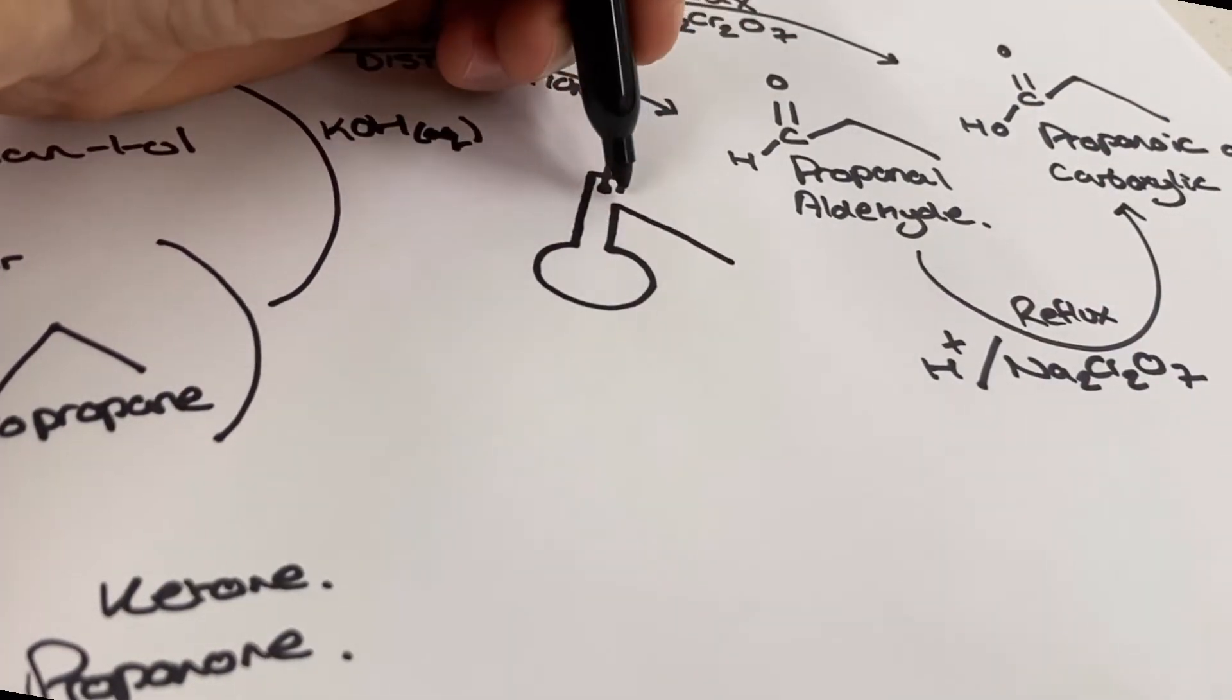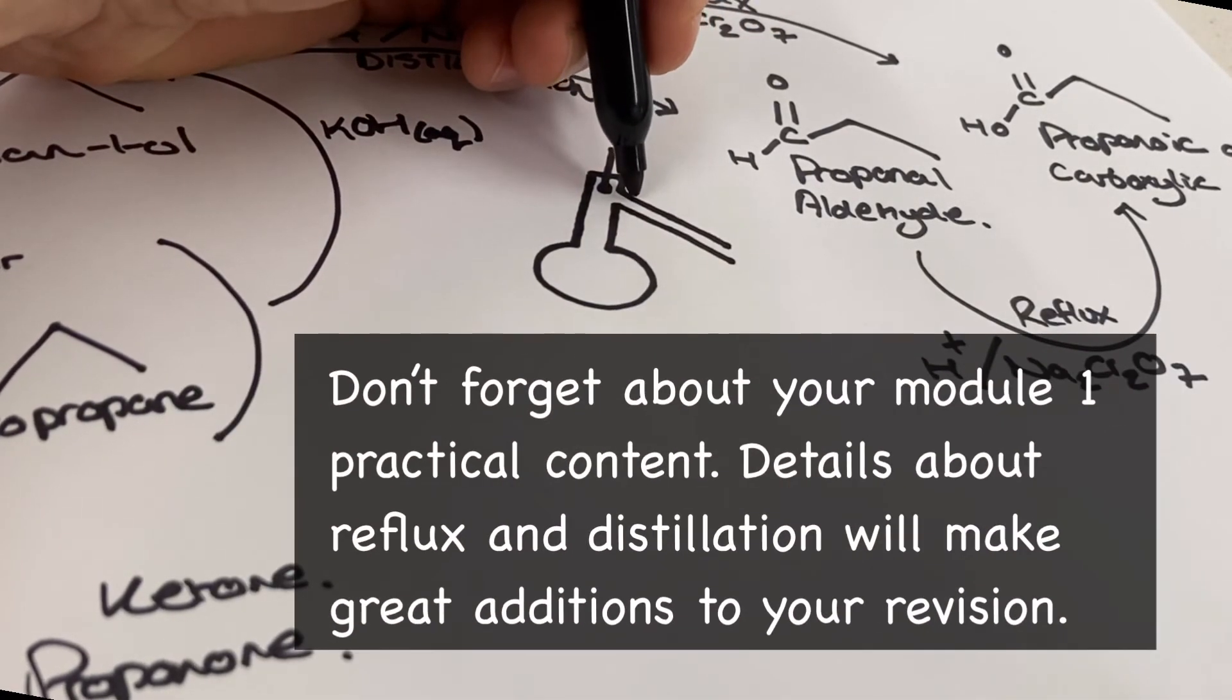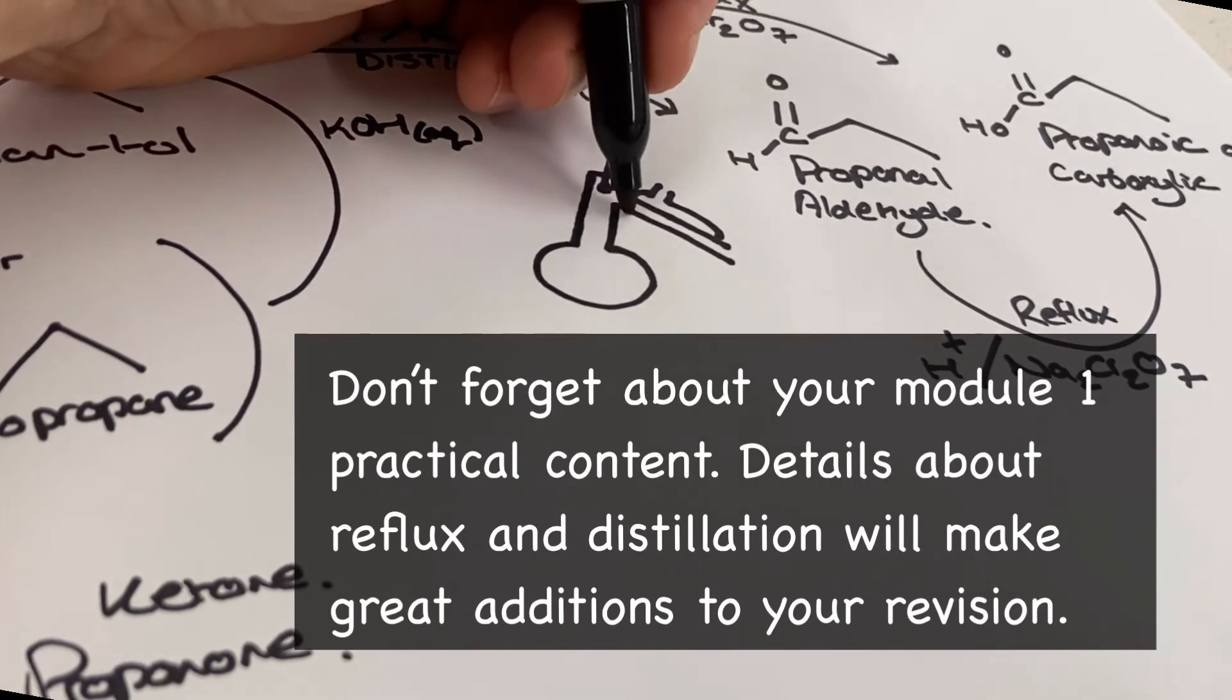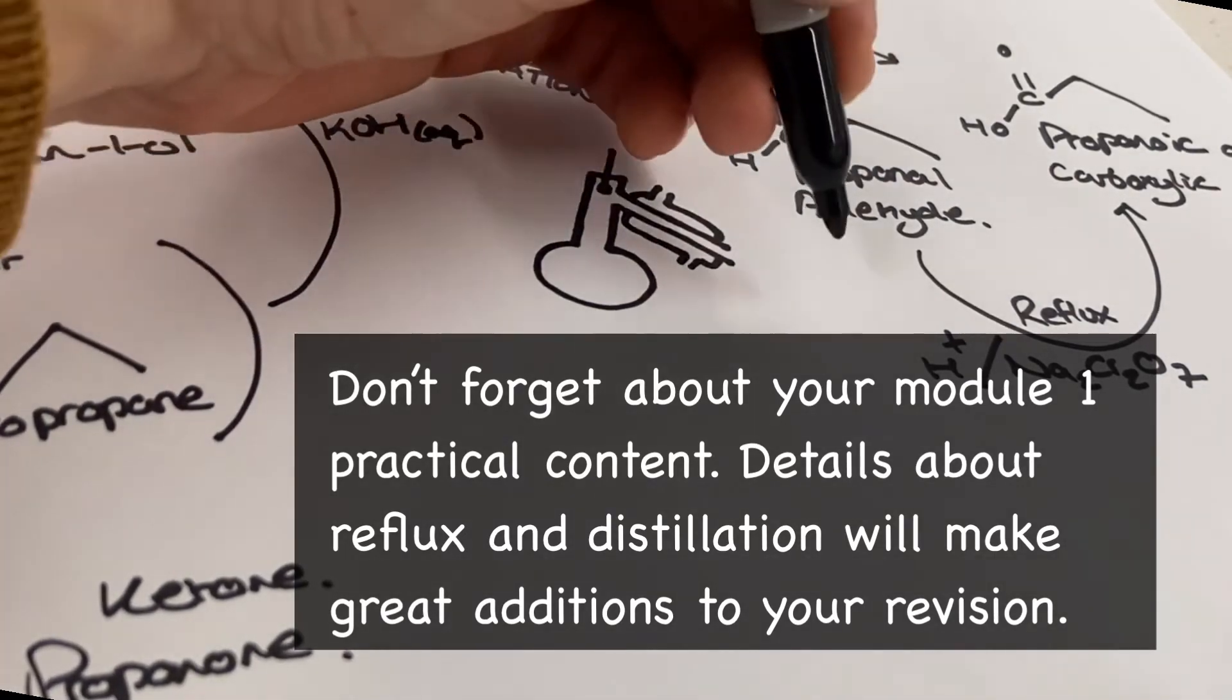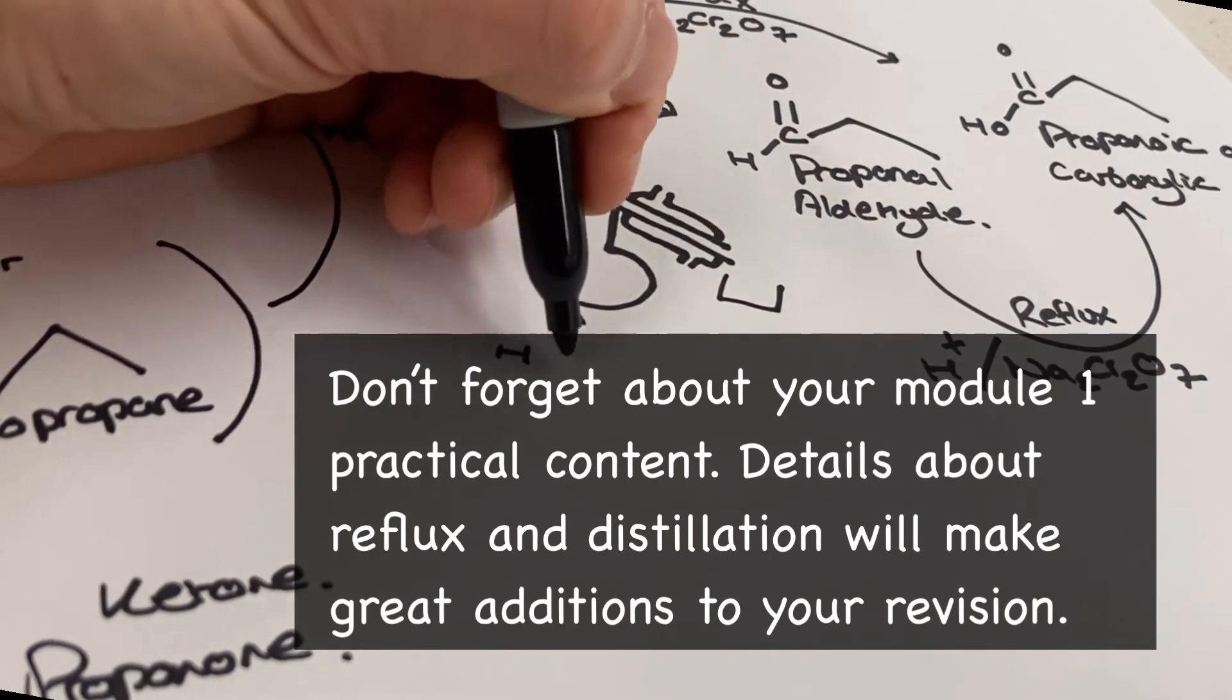As part of your A level in chemistry relating to module one, if you're following like us the OCR-A specification, some reactions like oxidations require you to also be aware of specific apparatus that is required to conduct the practical procedure. Remember that you need to be efficient in drawing these in your exam.